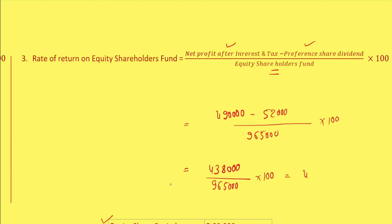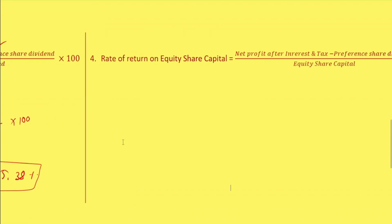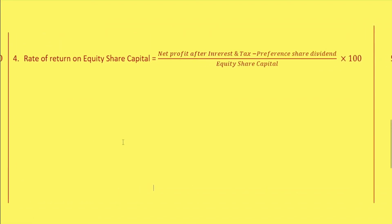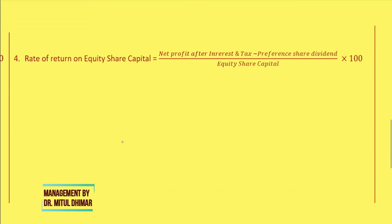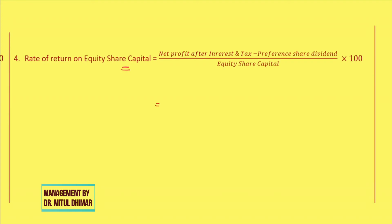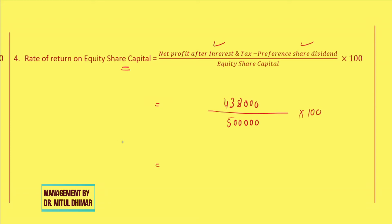The fourth ratio is rate of return on equity share capital. Here the investment is equity share capital only — not the full equity shareholders fund — which is 5 lakh rupees. The profit is the same as before: net profit after interest and tax minus preference share dividend, which we calculated as 4 lakh 38,000. So: 4 lakh 38,000 divided by 5 lakh into 100 gives a rate of return on equity share capital of 87.6%.